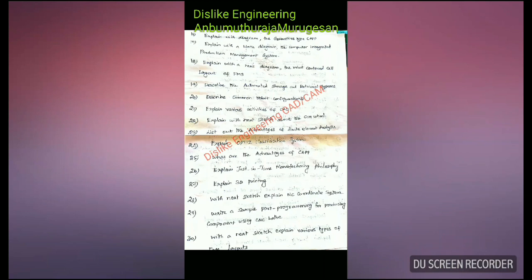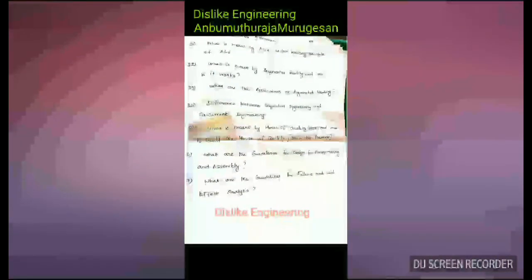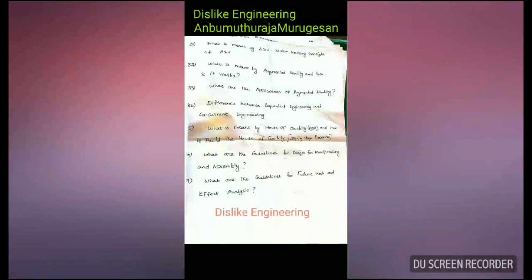The twenty-seventh question is: explain 3D Printing — already covered under rapid prototyping 4 types. The twenty-eighth question is: with a neat sketch, explain the NC Coordinate System. The twenty-ninth question is: write a sample program for producing a contour using CNC. The thirtieth question is: explain various types of FMS layouts.